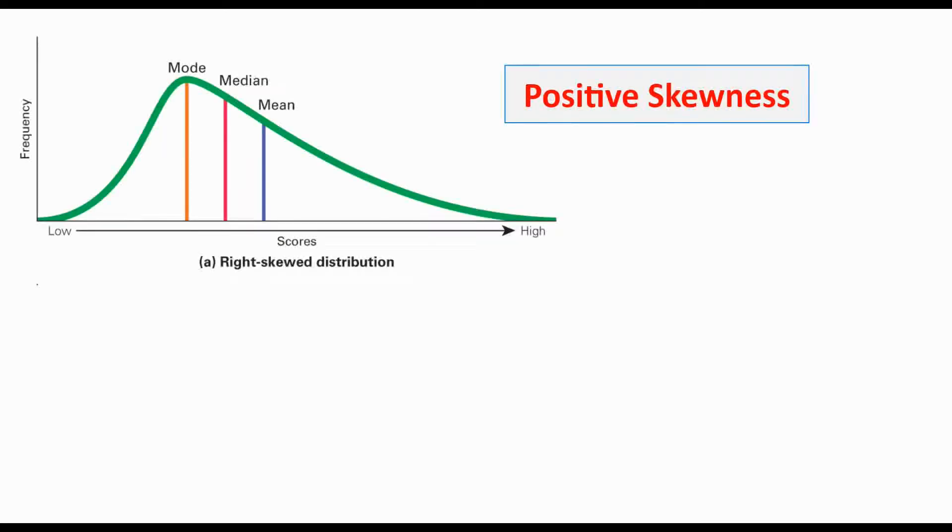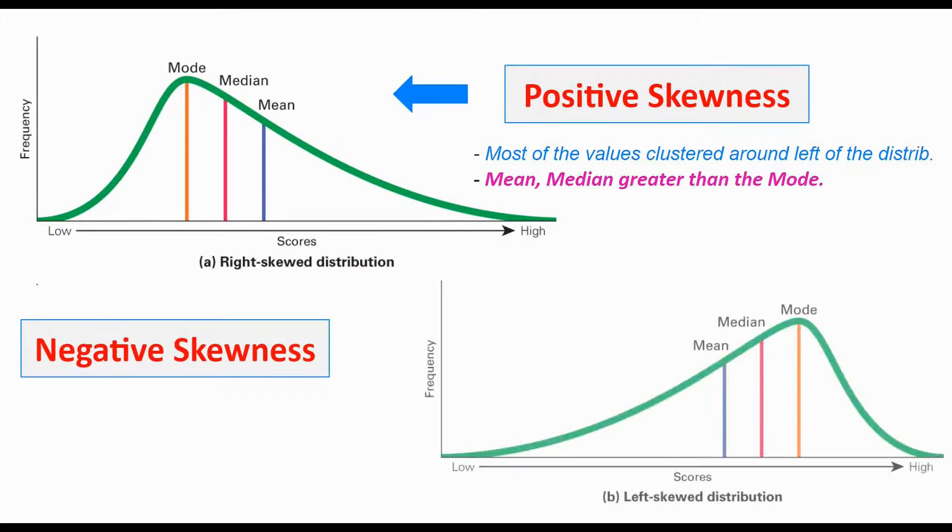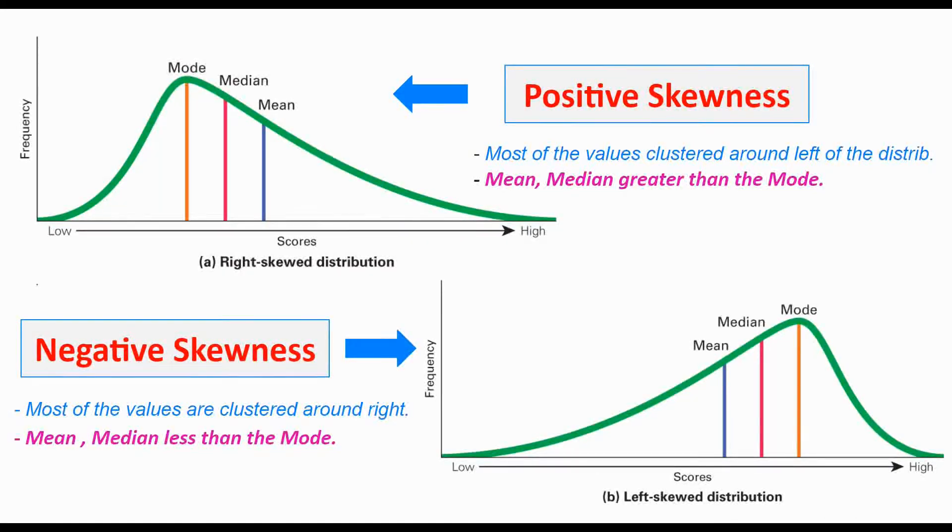In positive skewness, most of the values seem to be clustered around the left side of the distribution. You can see in the graph, and mean and median are greater than the mode on the x-axis. Contrary to this, in negative skewness, we have most of the values clustered around the right side of the distribution, and mean and median are less than the mode, the most frequent value of the distribution.